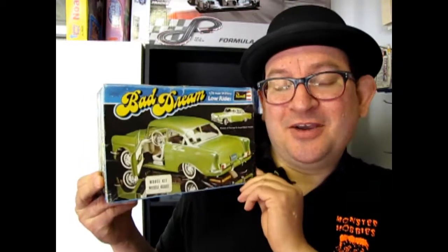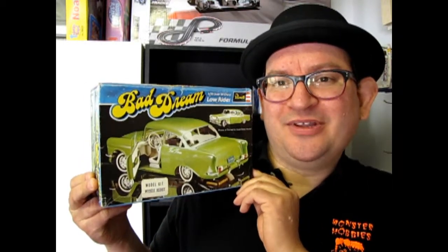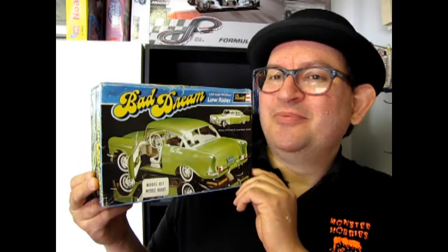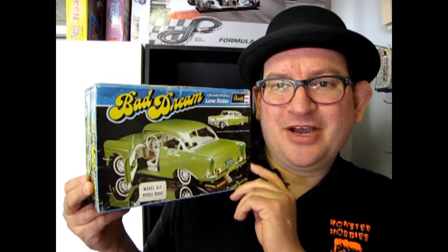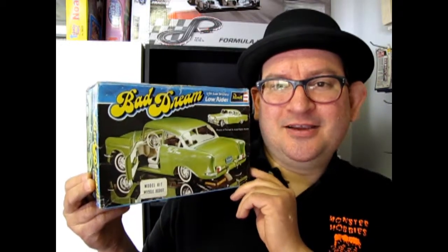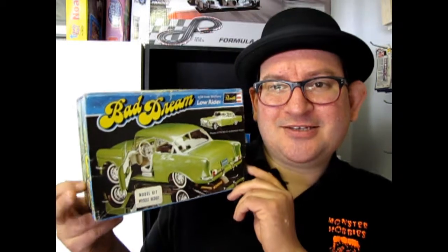Sometimes you actually come across a real oldie goldie and this is one of the moldy yummies that we got. From back in the day, this is the 1956 Chevy Bad Dream Lowrider kit by Ravel. This is like late 70s, early 80s, somewhere in there.